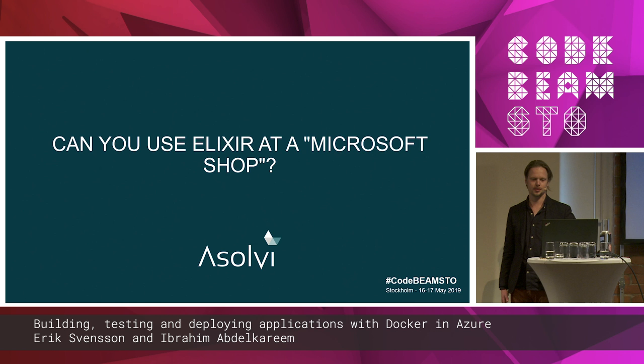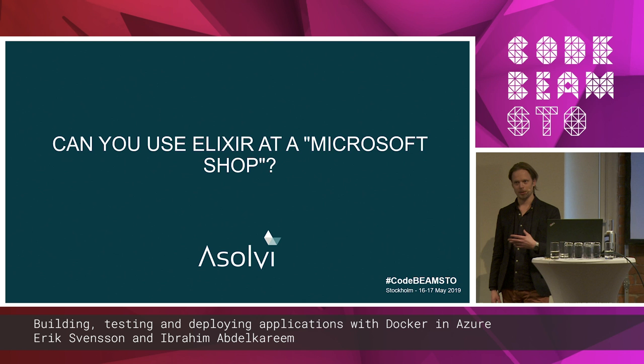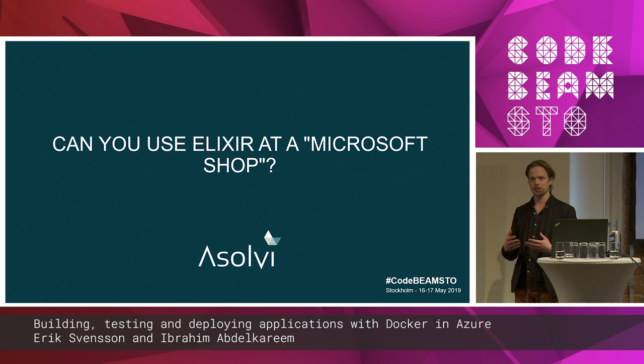We started looking at functional languages because they might better model the reality of our customer domains. We started looking at Elixir specifically because we want the high capacity and everything that the Elixir OTP platform promises. It also has a limited set of keywords, which limits the developer a little in the things you can choose from, so we don't end up in very long discussions on which pattern, framework, or libraries to use.